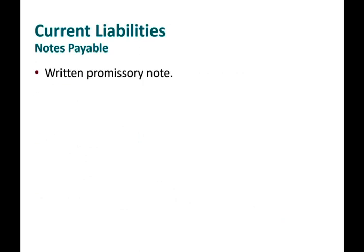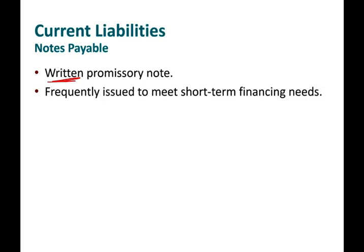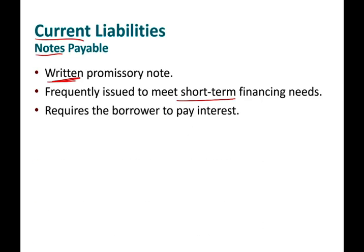What is a notes payable? Basically, a notes payable is a written promise — an official promise to pay money — frequently issued to meet short-term financial needs. Notes could be short-term or long-term, but if we're dealing with current liabilities, it must be short-term. It requires the borrower to pay interest, and it's issued for varying periods — it could be three months, six months, twelve months, whatever amount based on your needs.